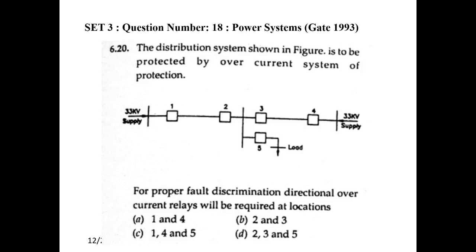So we require directional overcurrent relays at locations 2 and 3. To summarize: for a fault between breakers 1 and 2, the fault current is fed from both sources — via breaker 1 and via breakers 4, 3, 2 — causing direction reversal at breaker 2. Similarly, for a fault between 3 and 4, reversal occurs at breaker 3. Breaker 5 requires no directional relay as the current direction always remains the same.